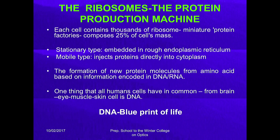Ribosomes are the protein-producing machines. Each cell contains thousands of ribosomes — miniature protein factories — composing 25 percent of cell mass. There are stationary types embedded in the rough endoplasmic reticulum, and mobile types that inject proteins directly into the cytoplasm. The formation of a new protein molecule from amino acids is based on information encoded in our DNA and RNA.